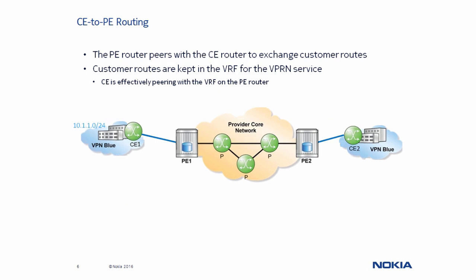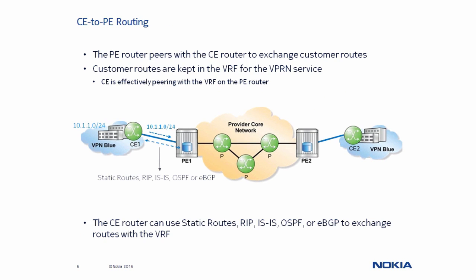Let's take a closer look at how the customer router CE1 advertises its routes to the provider edge router PE1. First, CE1 peers with PE1 in order to exchange routing information. PE1 then stores this information in the blue VRF, so essentially we can say that CE1 is peering with the blue VRF on PE1. This process can happen over static routes or protocols such as RIP, ISIS, OSPF, or eBGP.